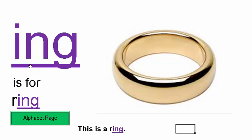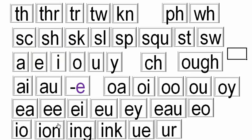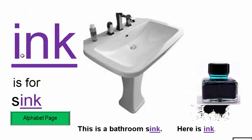ING is for RING. This is a ring. People also talk about SING — so you've got RING and SING. INK is for SINK. This is a bathroom sink. But here is also a bottle of INK.